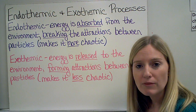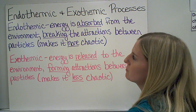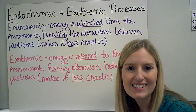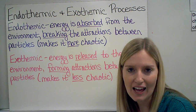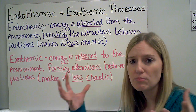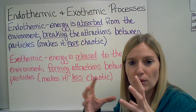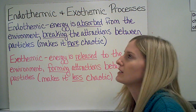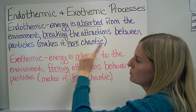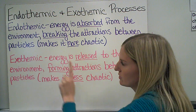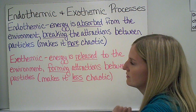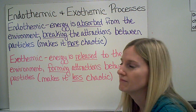When we have phase changes, they can either be endothermic or exothermic. Endo means inside. So when I have an endothermic reaction, energy is being absorbed or brought into the substance, and it ends up breaking the attractions between the particles, making the substance more chaotic, just like we saw in the previous slide.